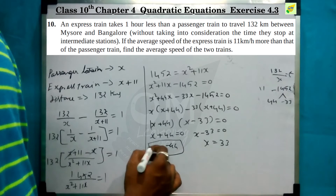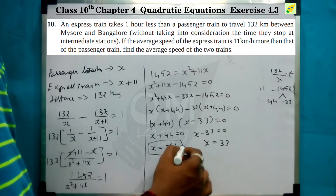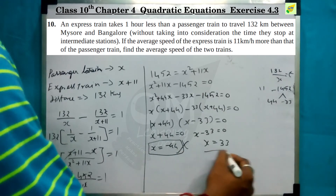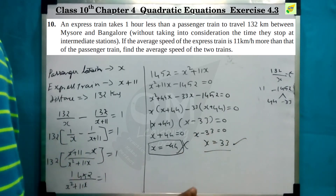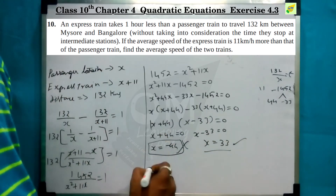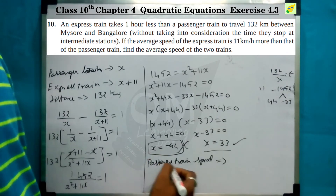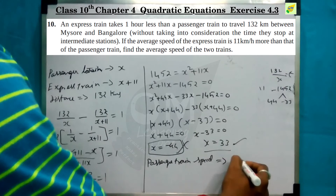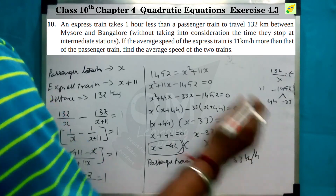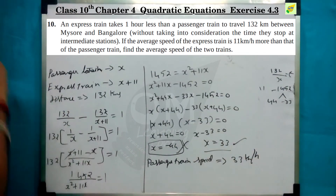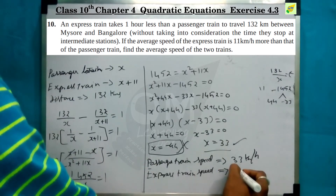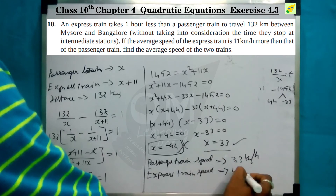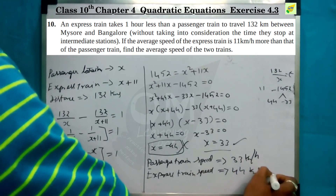Since speed, distance, and length measurements cannot be negative, we omit x equals minus 44. So the passenger train speed x is 33 km per hour, and the express train speed is x plus 11, that is 33 plus 11 equals 44 km per hour.